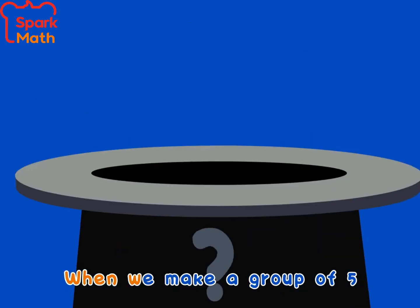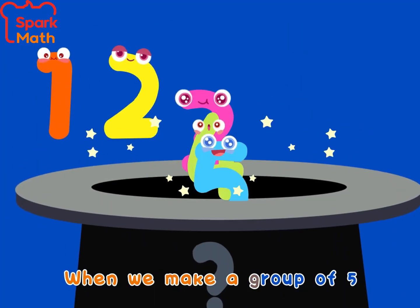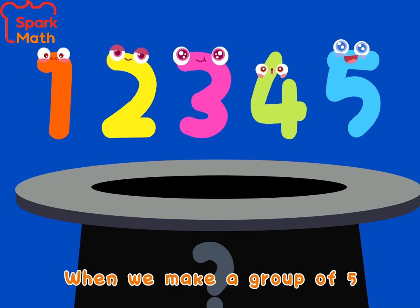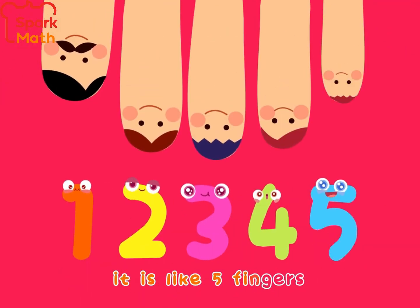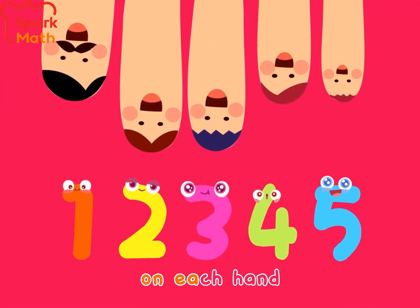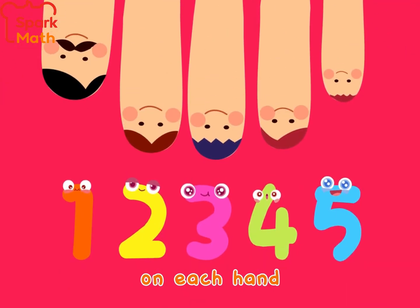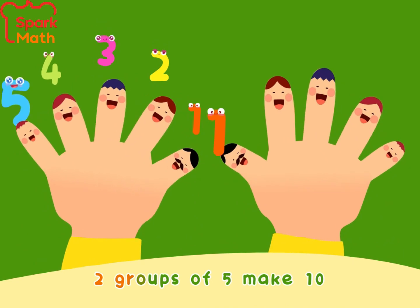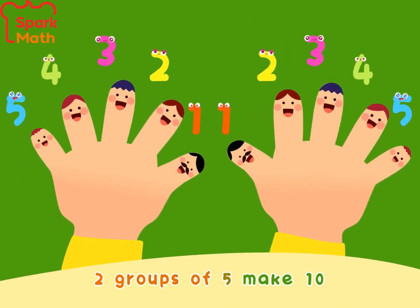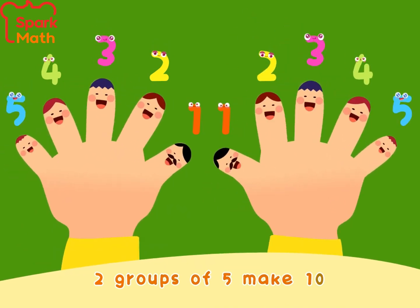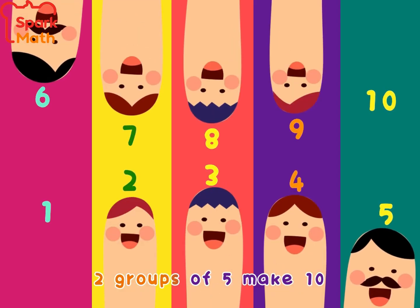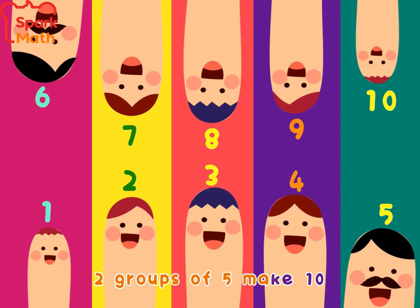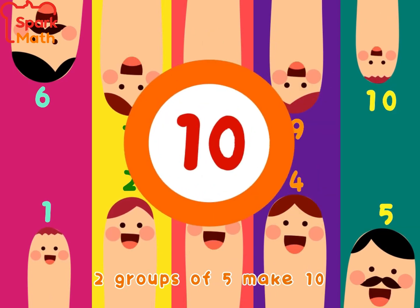When we make a group of 5, it is like 5 fingers on each hand. 2 groups of 5 make 10.